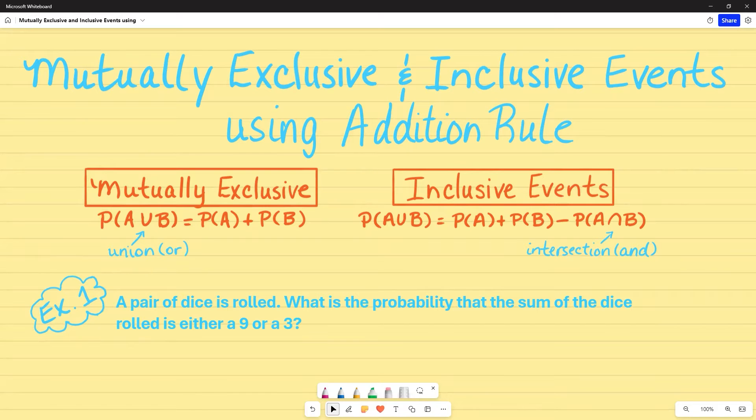So before I start, let's go over what it means. Mutually exclusive is where you cannot have something happen at the same time. If I am talking mutually exclusive, then I'm going to use this addition rule. This symbol, the union symbol, is used when we're using the word or in a word problem. So it's the probability of A plus the probability of B.